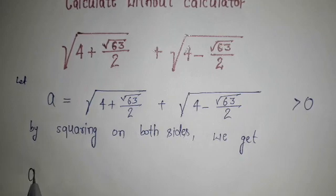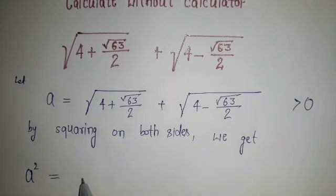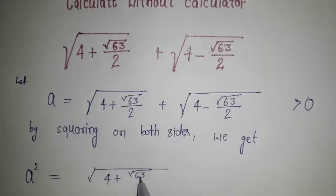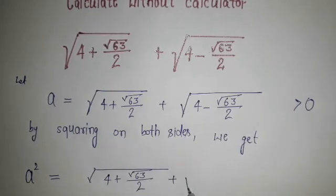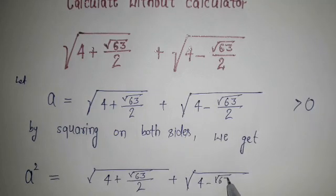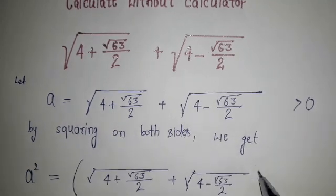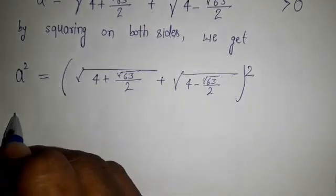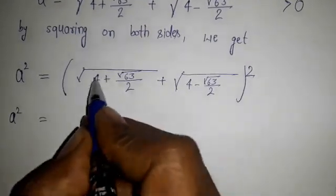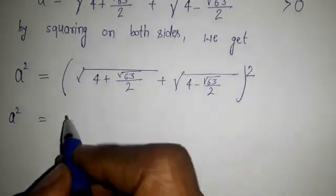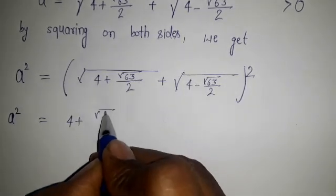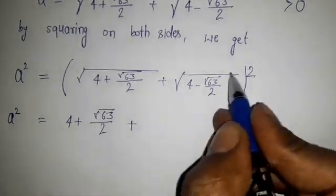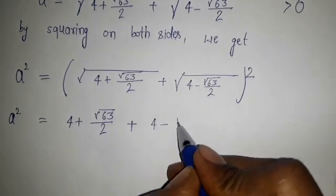Here we have a squared. I'm going to put square, so the square root will cancel. We have 4 plus square root of 63 by 2, and this will also be squared. The root will cancel, so 4 minus square root 63 by 2.